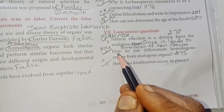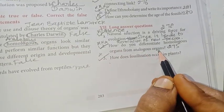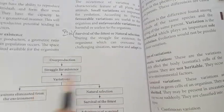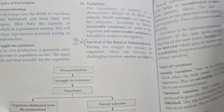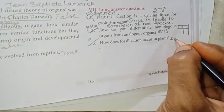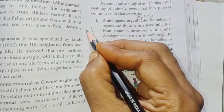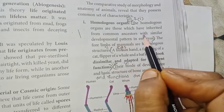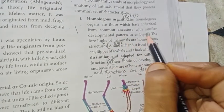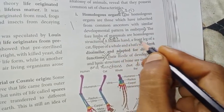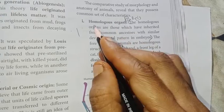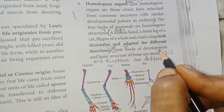Second long answer: how do you differentiate homologous organs from analogous organs? Differentiate in a tabular column, page number 275. Homologous organs are those which are inherited from common ancestors. Example: the human hand, front leg of a cat, flipper of a whale, and bat's wing — they look dissimilar but are adapted for different functions.